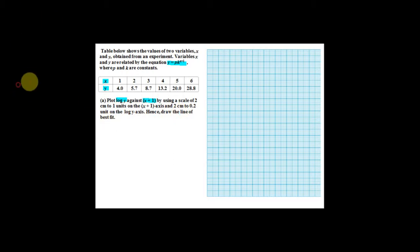For most past year questions, you can actually get your big Y and big X from part A. So in this case, your big Y equals log y and big X equals x plus 1. Now you should have a table where the first row is x plus 1 and the second row is big Y.